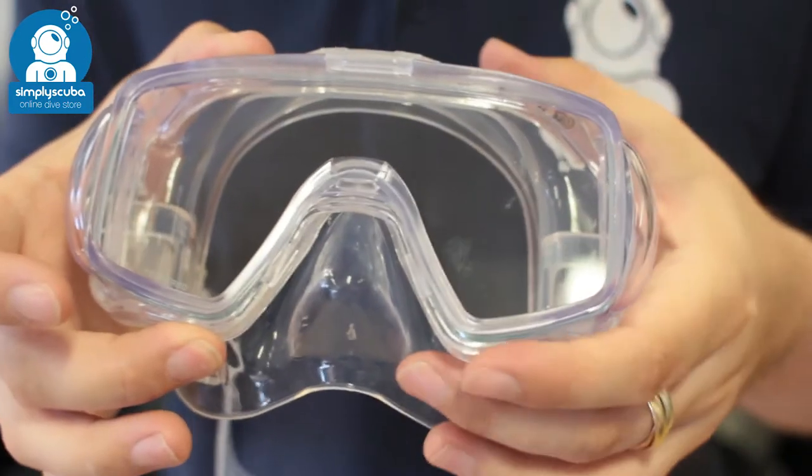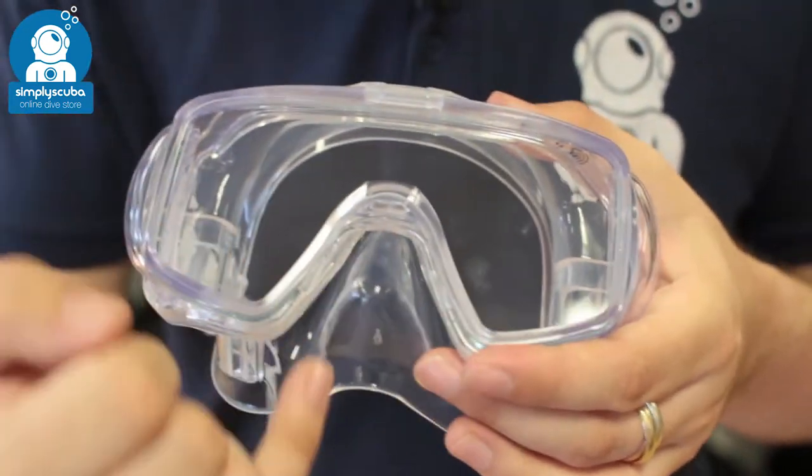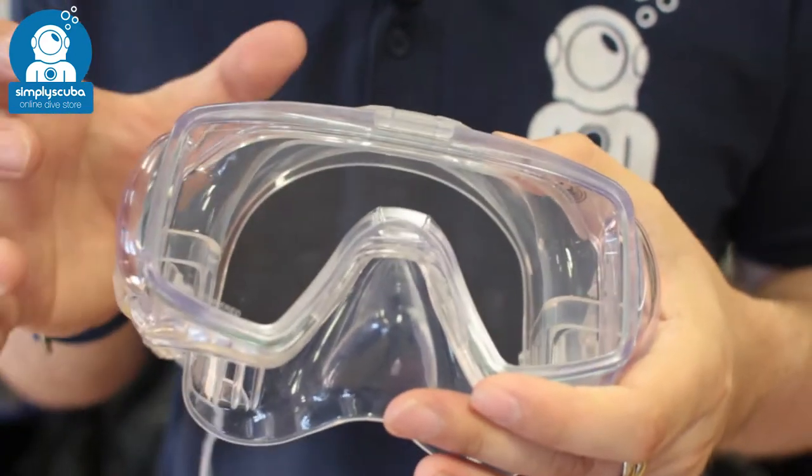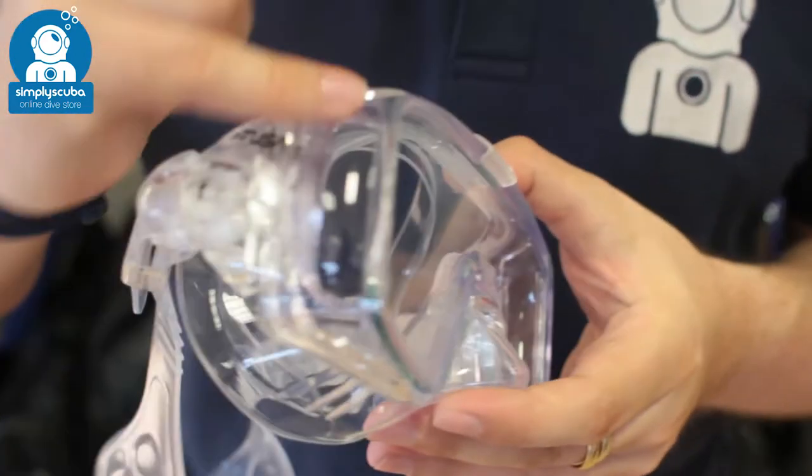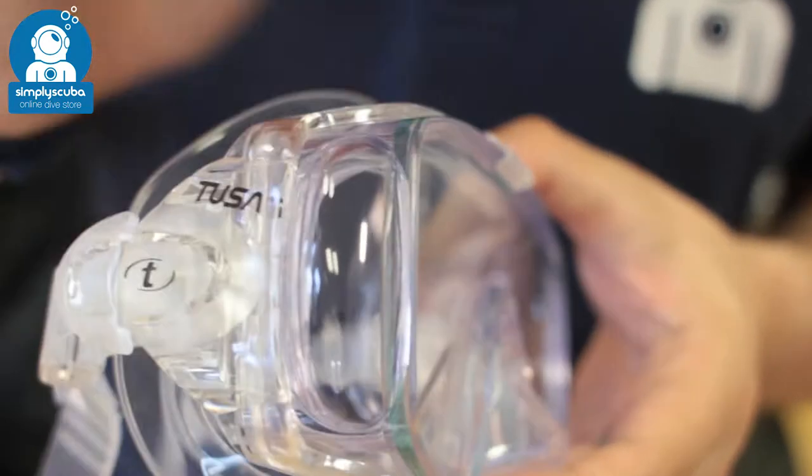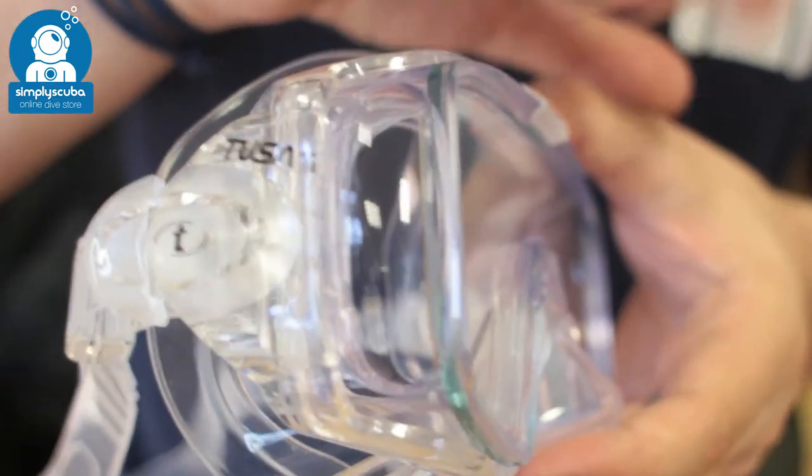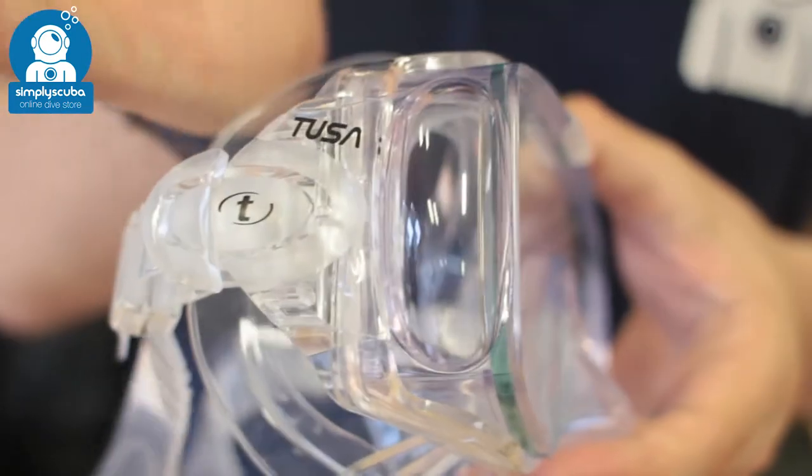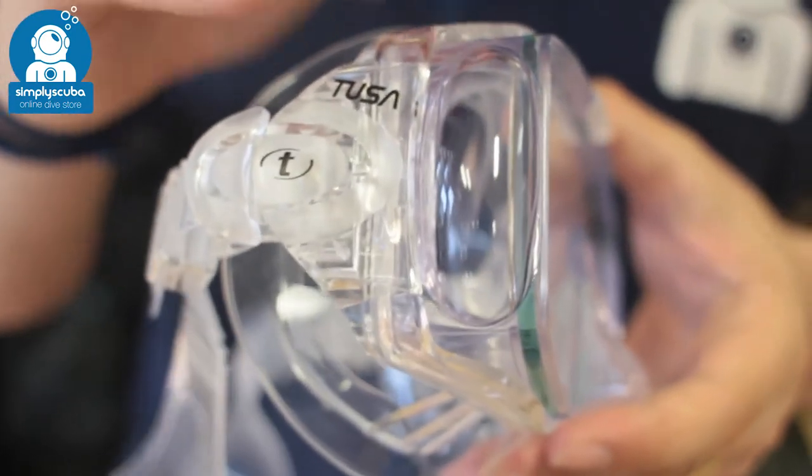You've got the frame to keep the structure and you still have full access to your nose to equalize your ears, but the real magic comes in these side windows. Instead of just having that front lens and limiting it at that, they've created this bubble which gives you a much wider field of vision, so when you're underwater you can see what's coming up the sides.